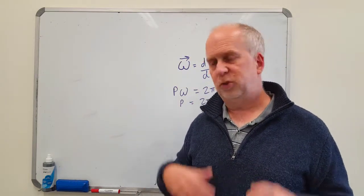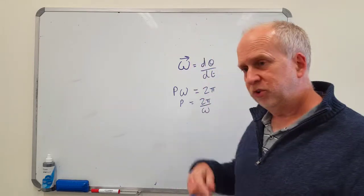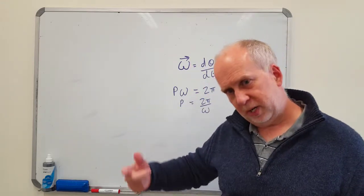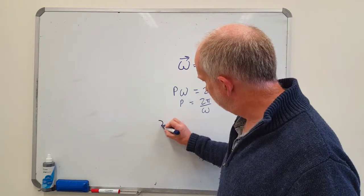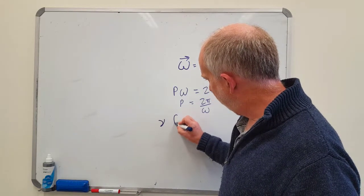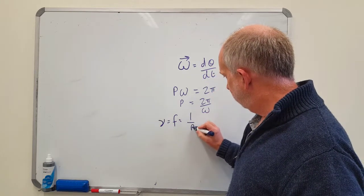The other thing we sometimes use is frequency. Like we're spinning at 500 times per second, or something like that. Now frequency is just how many times you do a complete revolution per second. So the frequency, which is written either with the Greek letter nu or with f, is equal to 1 over the period.